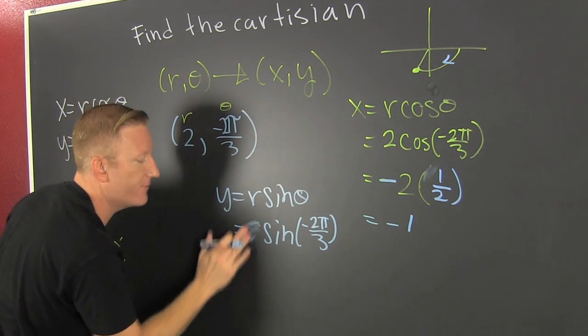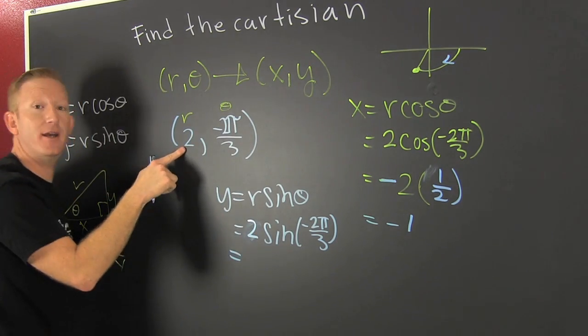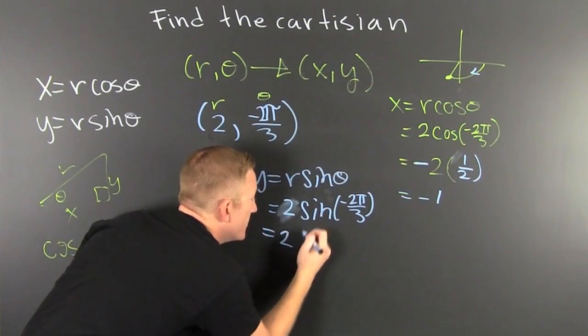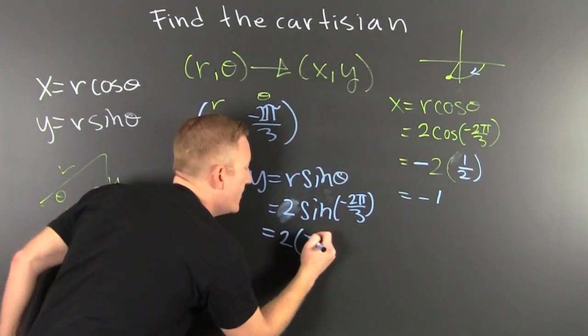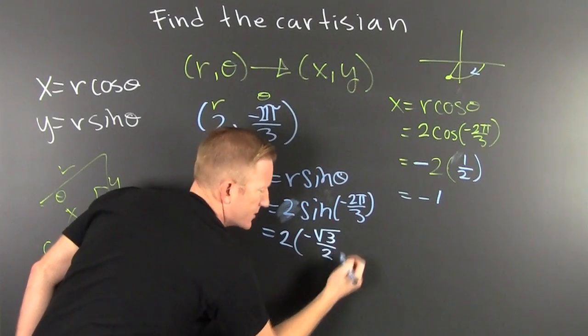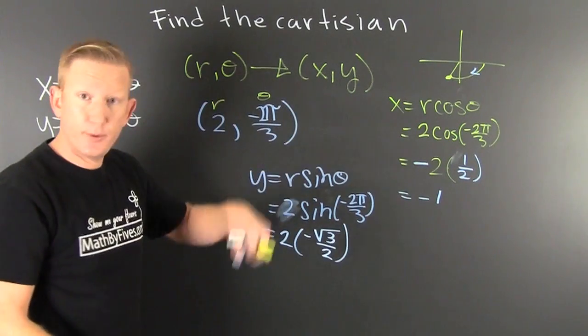My r is a 2. And I deduce that this is going to be 2 times minus root 3 over 2, because root 3 over 2 is the sine of minus 2π over 3.